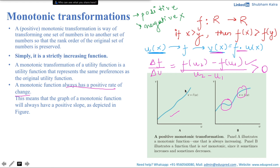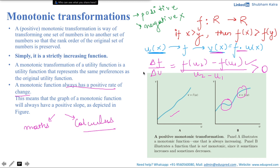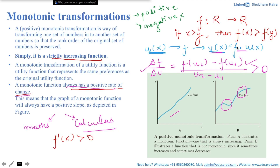After learning about monotonic transformation, let's understand how to tell whether a given function is a monotonic transformation or not. You have two approaches: one using simple math — calculating the rate-of-change expression and checking if it is positive — but this can be cumbersome. The better approach is using calculus. To check monotonicity using calculus, focus on the concept of a strictly increasing function: the first derivative f′(x) must be strictly positive. In this case, that means V′(x) must be strictly positive.